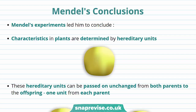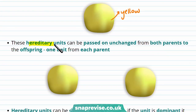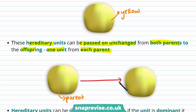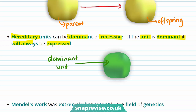So we've talked about how Mendel used pea plants to understand inheritance. Mendel's experiments led him to conclude that characteristics in plants are determined by hereditary units, and these units can be passed on unchanged from both parents to the offspring — one unit from each parent. For example, a yellow parent pea plant passes on the unit that causes the yellow colour to its offspring, making that offspring also yellow. Mendel also discovered that these hereditary units can be dominant or recessive. If the unit is dominant it will always be expressed — so if a dominant unit causing green colour is inherited, the offspring will be green.